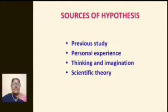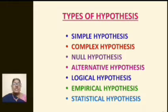Then coming to the types of hypothesis, there are seven types of hypothesis. So the first type is simple hypothesis, which is also known as basic hypothesis. It depicts the relationship between two variables.